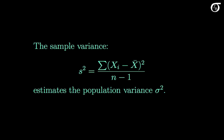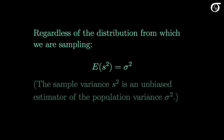Here's the sample variance s squared. In this video, a lowercase s squared represents the random variable that is the sample variance. The sample variance s squared is an estimator of the population variance sigma squared. Regardless of the distribution from which we are sampling, the expectation of the sample variance s squared is equal to the population variance sigma squared. So we say that the sample variance is an unbiased estimator of the population variance.